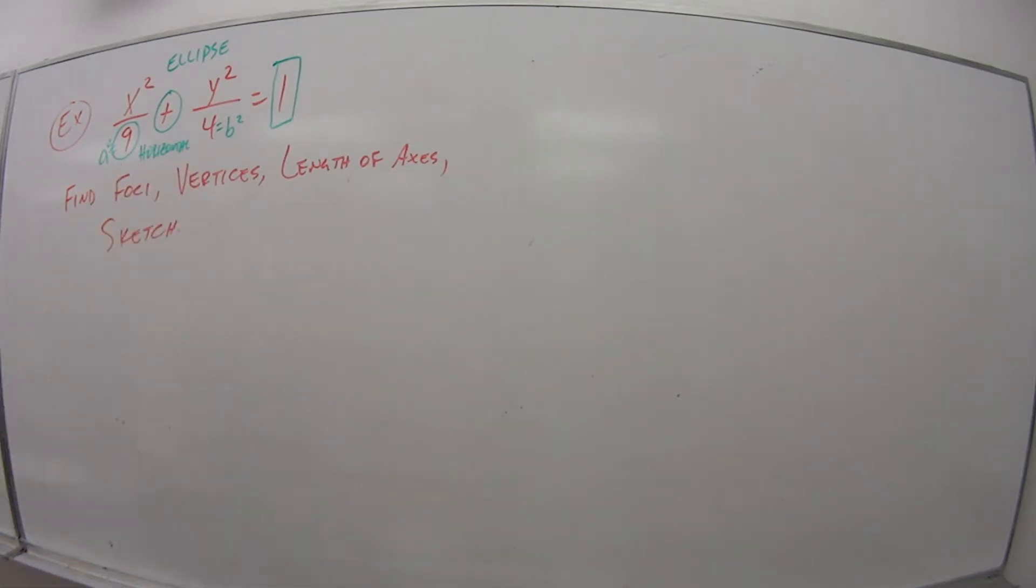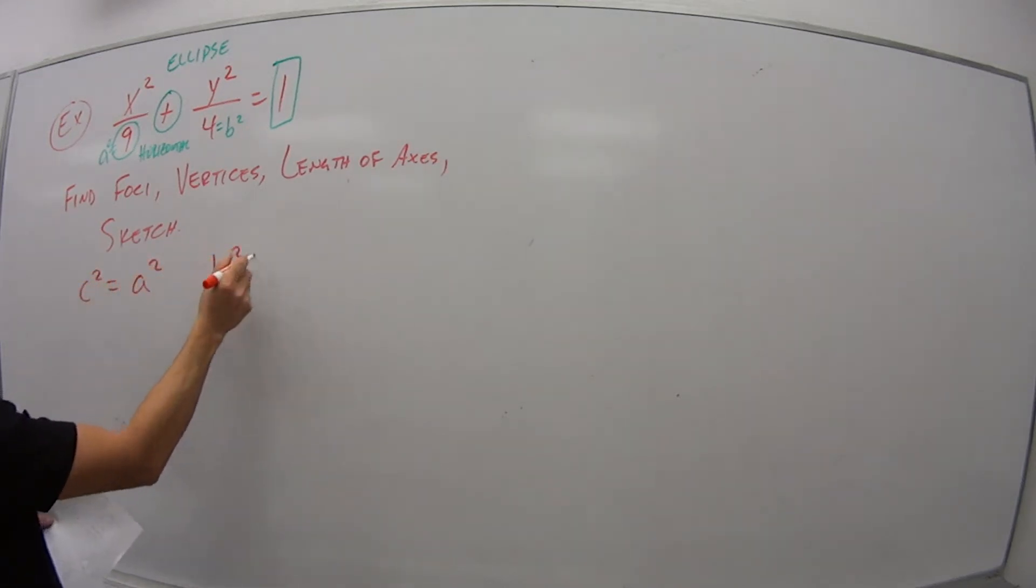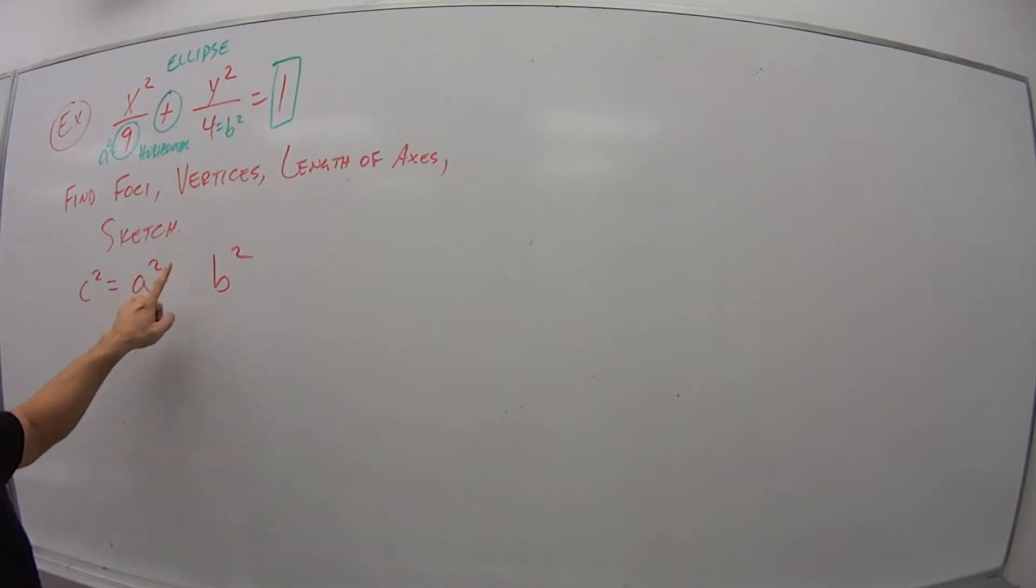Now I can start finding this information. If I want the foci, that's my equation: c squared, a squared, b squared. It'll be the same for the hyperbola, but I need to know what goes in here, a plus sign or a minus. It's always opposite of what's here. I have a plus sign, which means this has to be a minus sign. So c squared is a squared, which is the value under here, 9, minus b squared, which is 4.